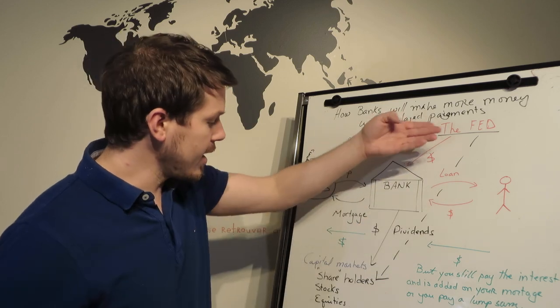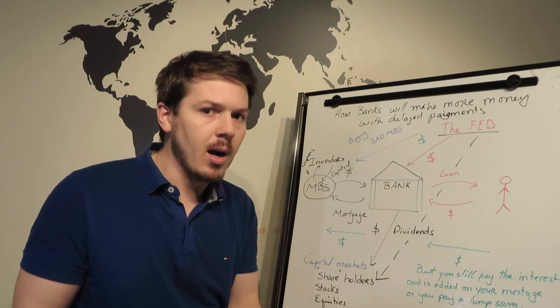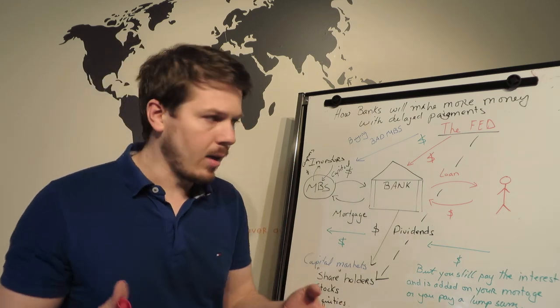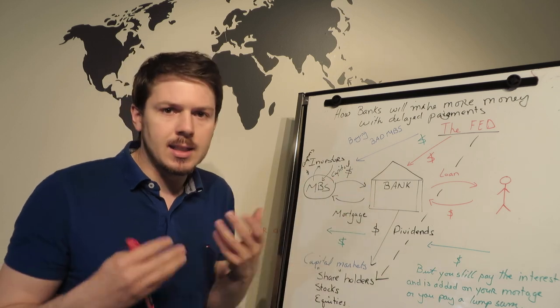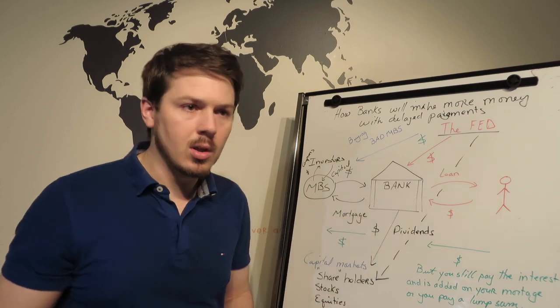So essentially, they're getting liquidity, they're getting low interest costs, they're getting the mortgage-backed securities which are crap on the Fed's balance sheet, and the Fed is also going to start buying capital markets.